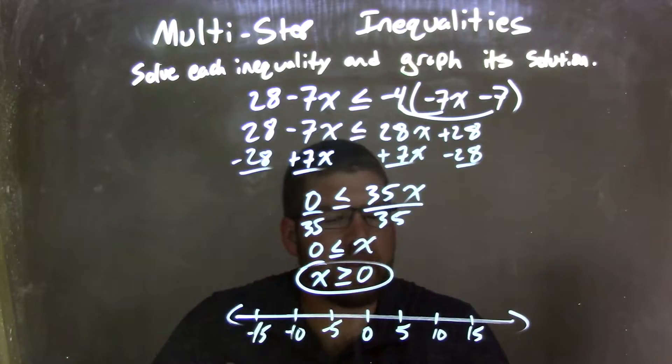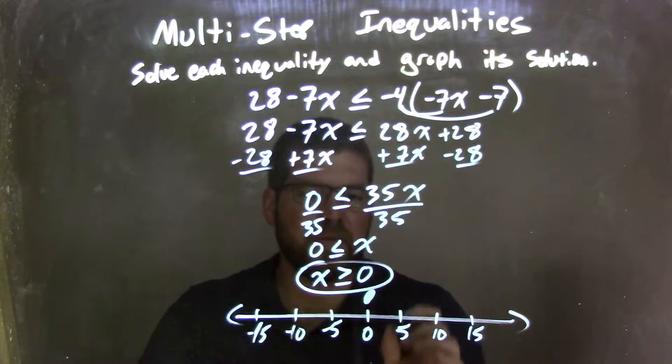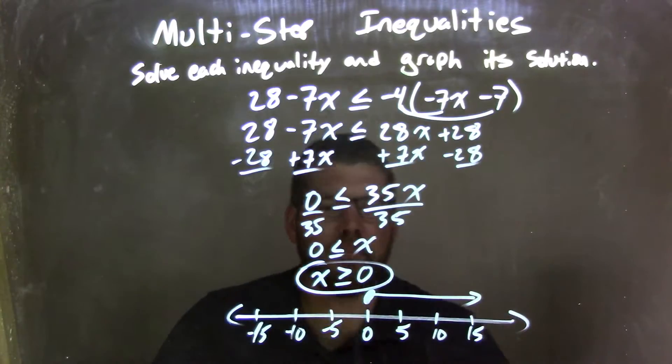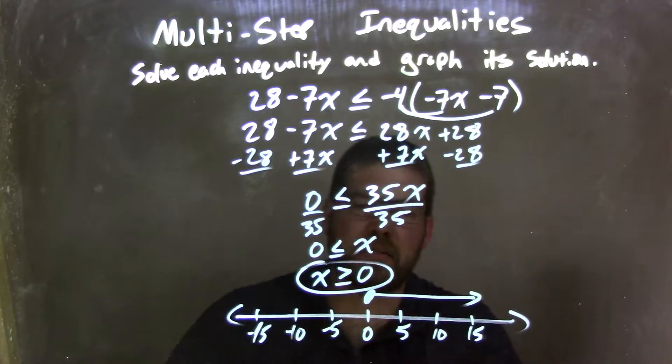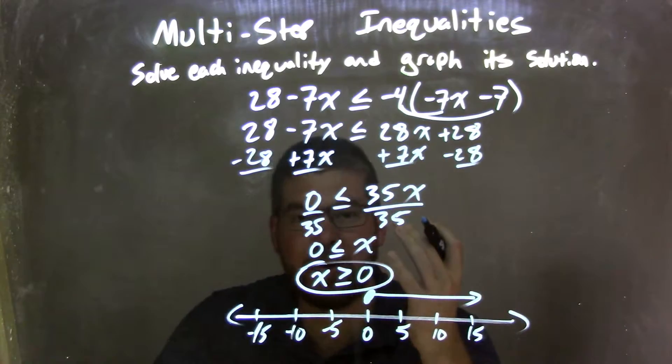Well, since x is greater than or equal to 0, we have a closed circle at 0 because it can equal 0. And our arrow goes to the right because x is also greater than that 0. So now our graph here matches our answer, which is x is greater than or equal to 0.